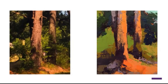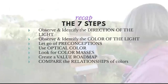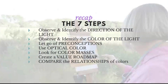Quick recap of the seven steps: observe and identify the direction of the light; observe and identify the color of the light; take a deep breath and let go of what you know; use optical color — equally intense but lighter color for highlights, equally intense but darker for shadows; look for color masses; create a value roadmap; and keep comparing those color relationships.